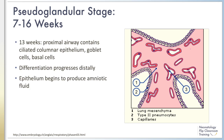By 13 weeks, the proximal airway contains ciliated epithelium, goblet cells, and basal cells. Differentiation of the airway continues to progress distally. The developing epithelium begins to produce amniotic fluids, a critical function of the fetal lungs.